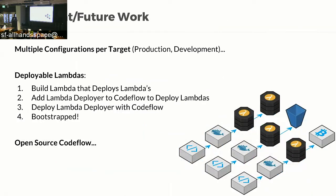For current and future work: multiple configurations per target. One of the most strongly requested features is to be able to deploy the same repository with multiple configurations — for example, deploying the web workers of a Rails app separately from the Sidekiq background workers, so they can have two separate configurations and separate review requirements and evolve independently.